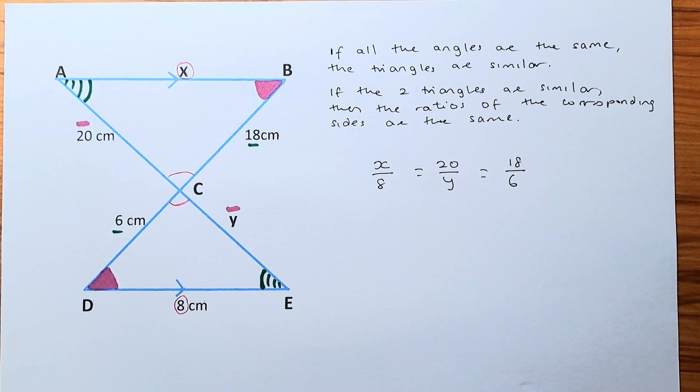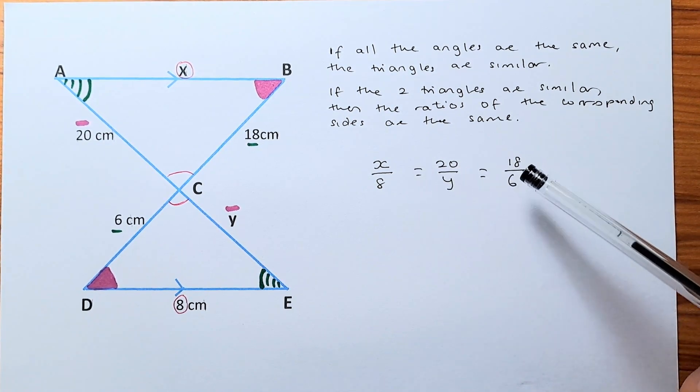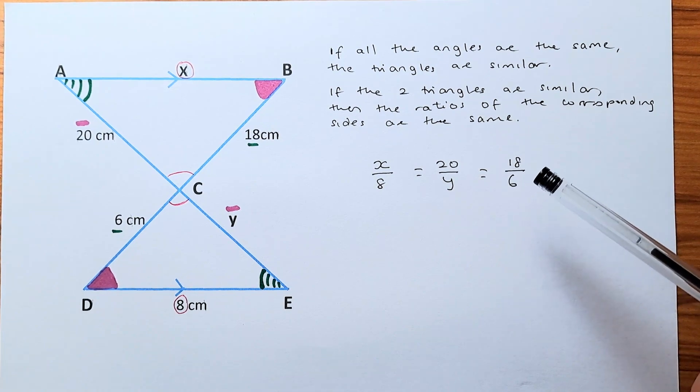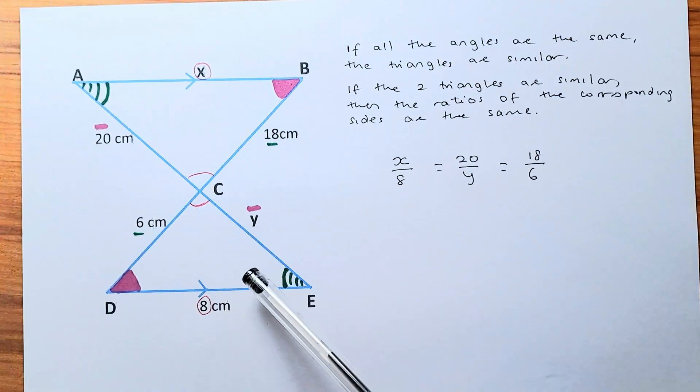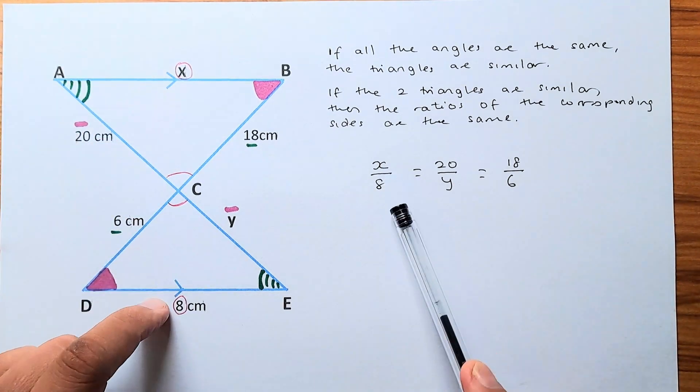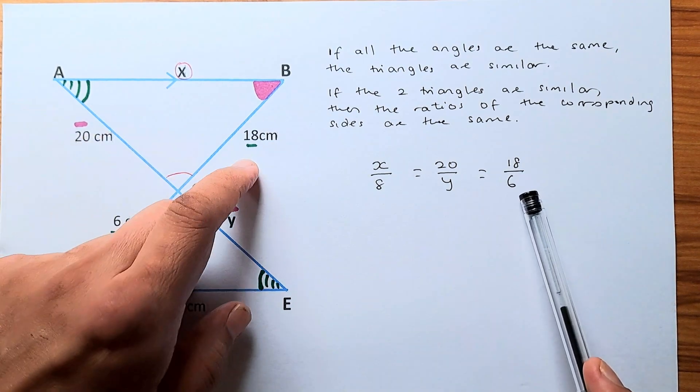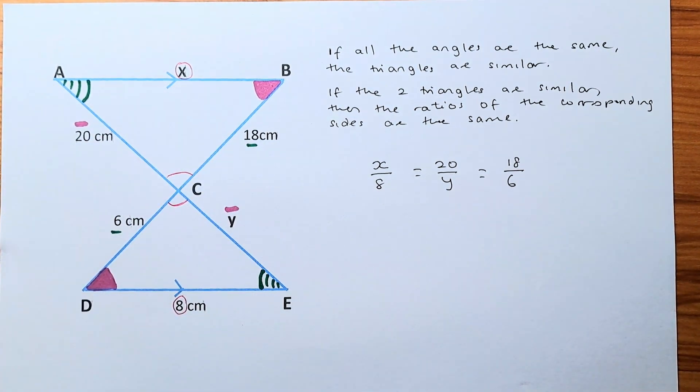So we form an equation. X over 8 is equal to 20 over Y is equal to 18 over 6. So you need to remember that you take the top triangle divided by small triangle. So in this case, if we have X first divided by 8, 20 divided by Y, and then 18 divided by 6. Once you know this, we can easily find the X and Y.